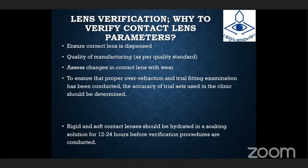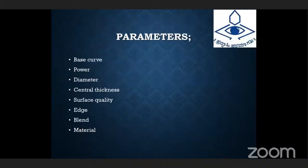To verify the contact lens, both lenses should be hydrated in a soaking solution for 12 to 24 hours before verification procedures are conducted. The parameters to be verified mainly include: base curve, power, diameter, central thickness, surface quality, edge, blend, and materials.